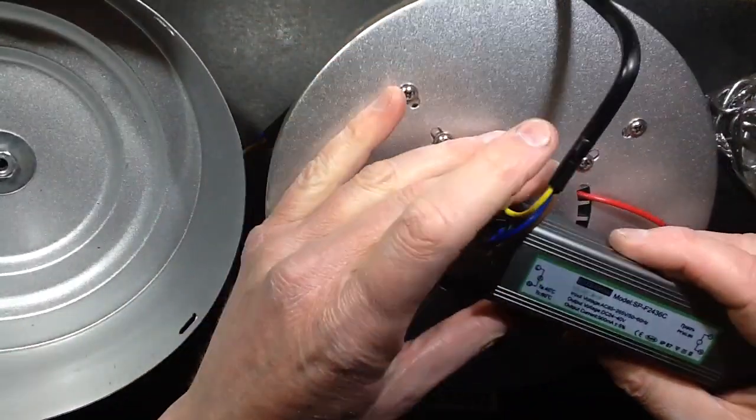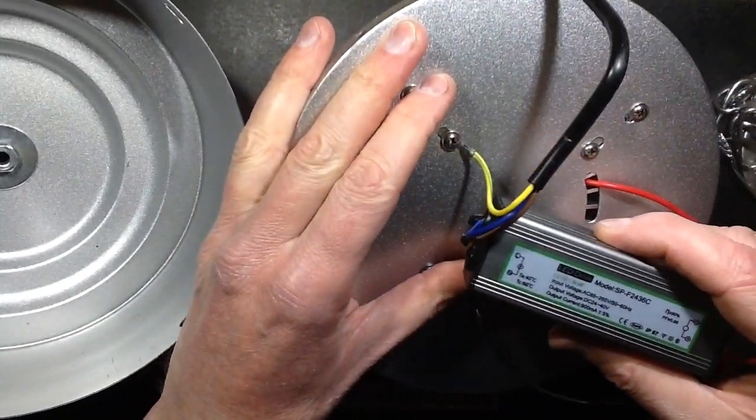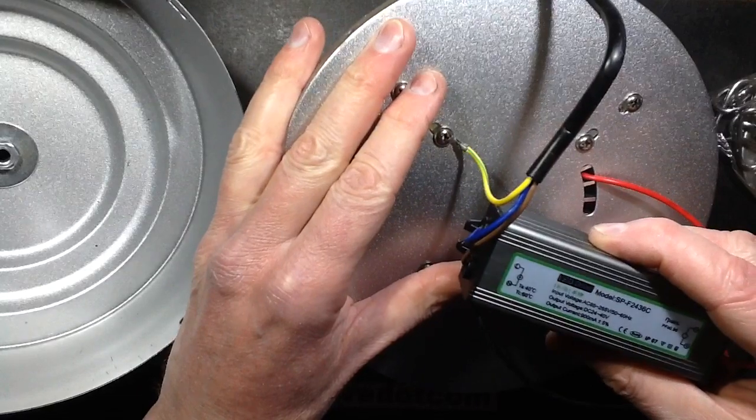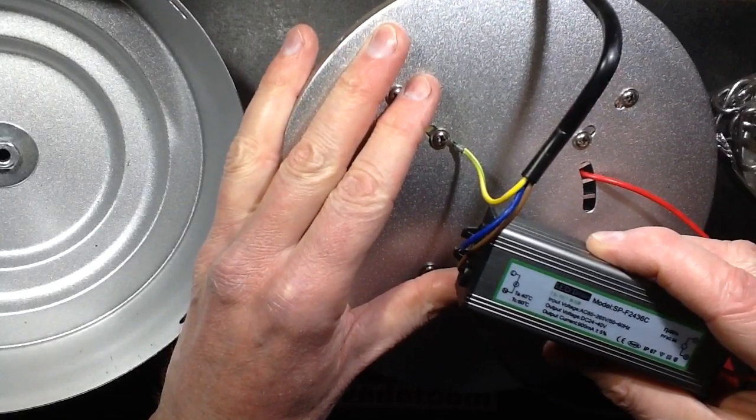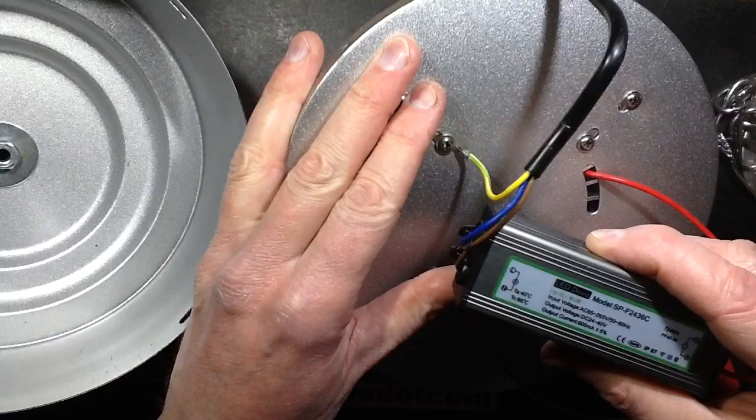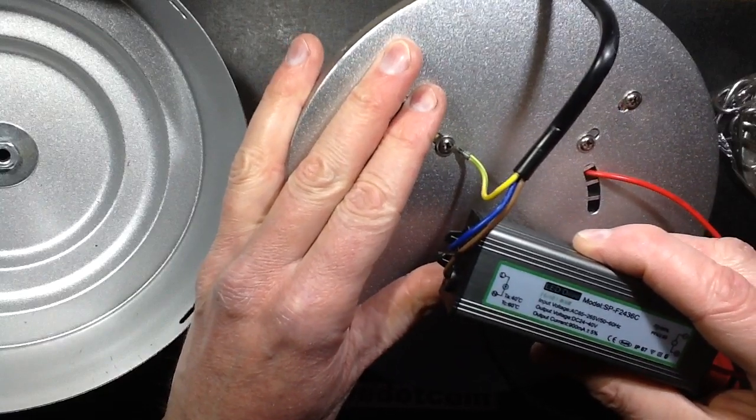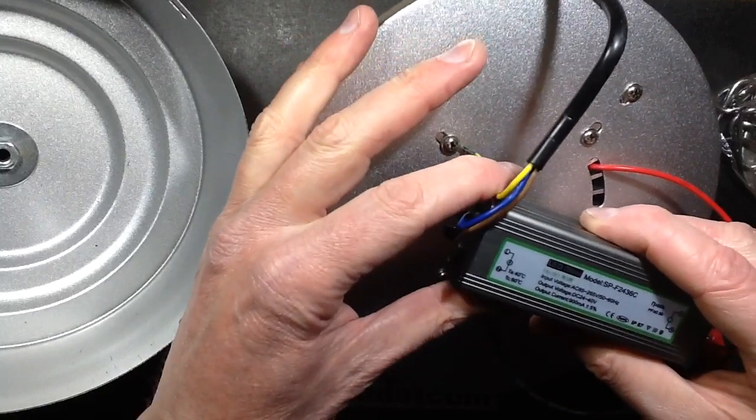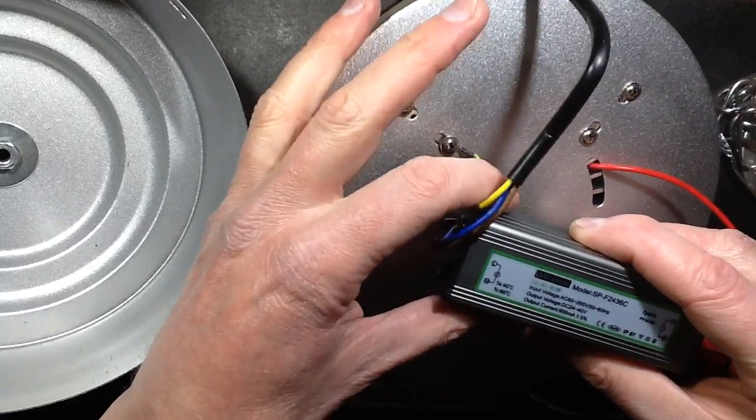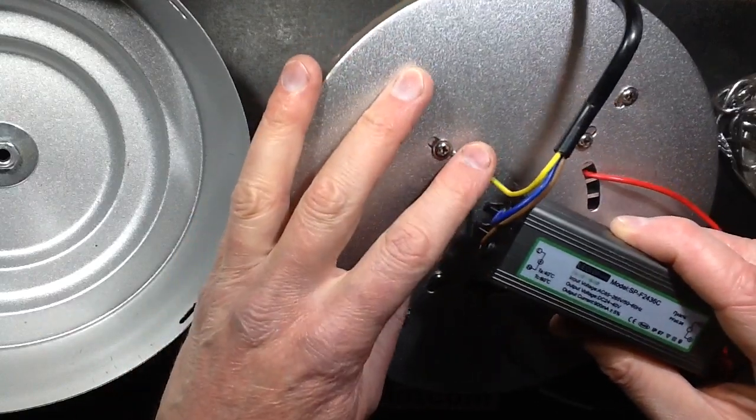The ballast is marked LED driver 8123, universal voltage output 24-40 volts at 900mA. So that is typically a 30W driver. Typically it's 300mA per 10W string of LEDs.